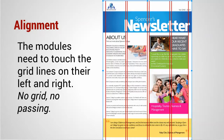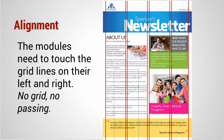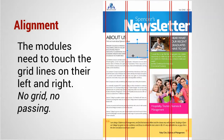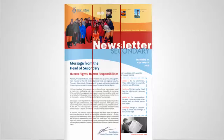Just remember: everything needs to be touching a grid column on the left and right. You wouldn't want to put a picture that's not touching on the left and right — you'd need to move it so it is touching. Everything on the page has to touch on the left and right.